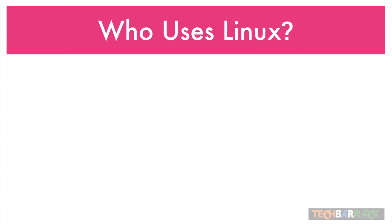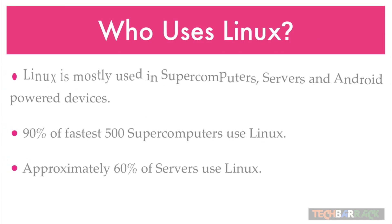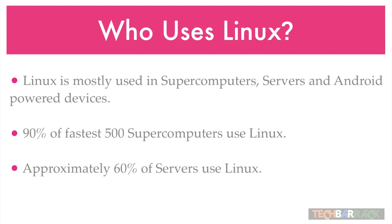Who uses Linux? Linux is mainly used in supercomputers, servers, and Android-powered devices. Supercomputers are the fastest computers in the world — they can do a large number of arithmetic calculations in a single second. 90% of the fastest 500 supercomputers use Linux, which gives us a hint that Linux is the fastest operating system.